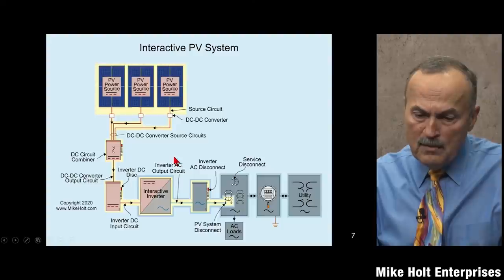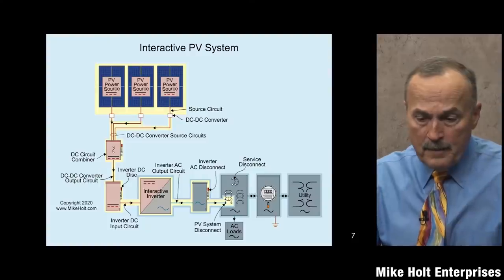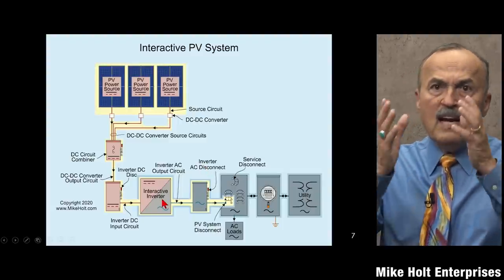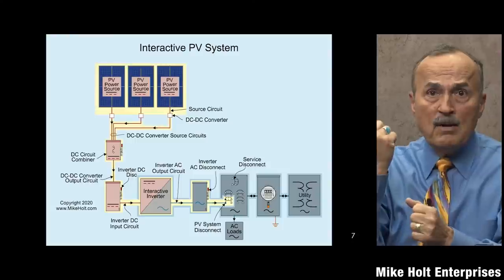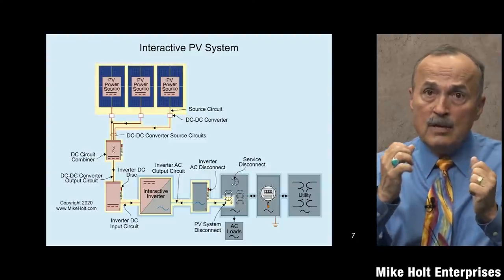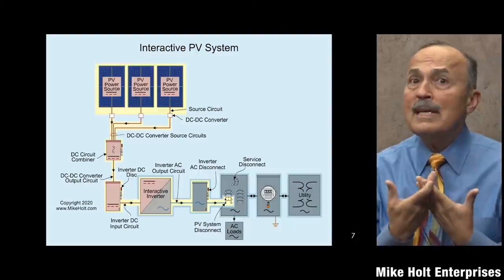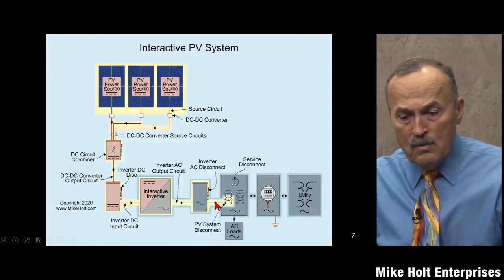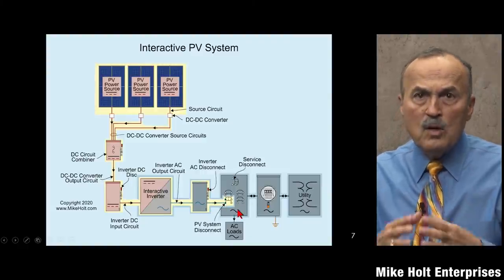What's leaving the inverter is the inverter AC output circuit. The terms are intuitive - DC input, AC output. Then there's a disconnect: the inverter disconnect. If you want to work on the inverter, you have to be able to turn off both the DC input power and the AC power. You need both an AC disconnect and a DC disconnect so you can safely service that equipment.